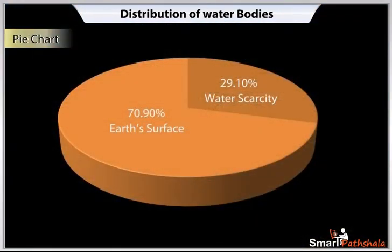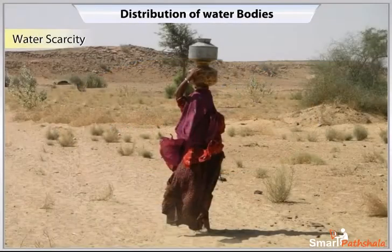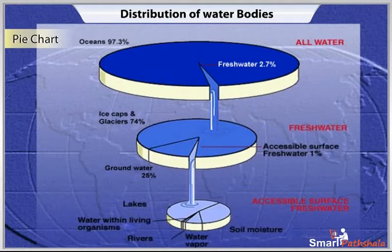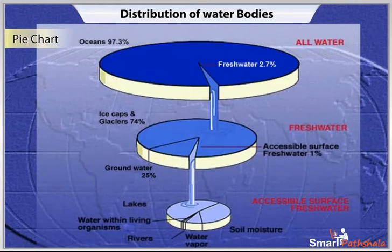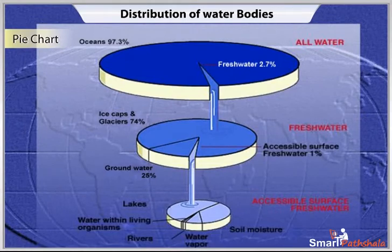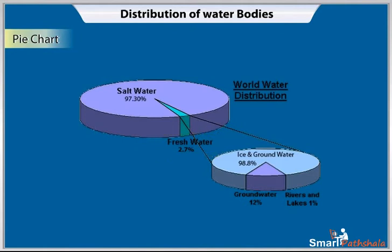Distribution of Water Bodies. Water covers 70.9% of the Earth's surface. Why do so many countries face water scarcity? The following table gives the distribution of water in percentage: Oceans 97.3%, Ice Caps 2.0%, Groundwater 0.68%, Freshwater lakes 0.009%, Inland Seas and Salt Lakes 0.009%, Atmosphere 0.0019%, Rivers 0.001%. Only 2.7% of the Earth's water is fresh water, and 98% of that is in ice and groundwater.